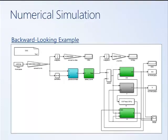This is a backward-looking model. It uses a lot of static elements and empirical maps, but also some physics-based models — for example, battery temperature is estimated using a differential equation model from first principles. This type of simulation runs very fast and can be used to answer questions such as sizing the battery or determining overall vehicle efficiency.